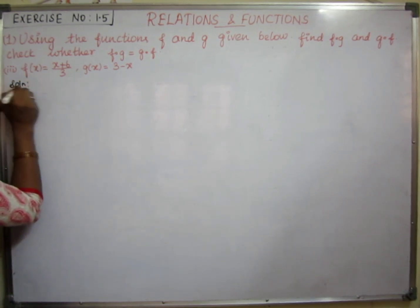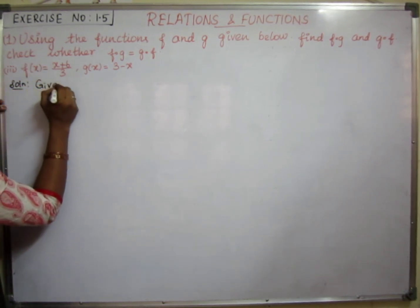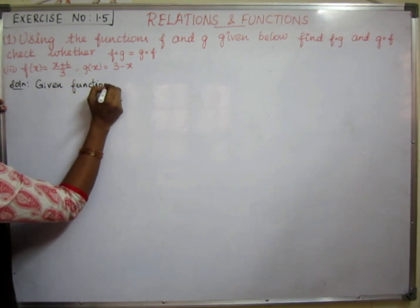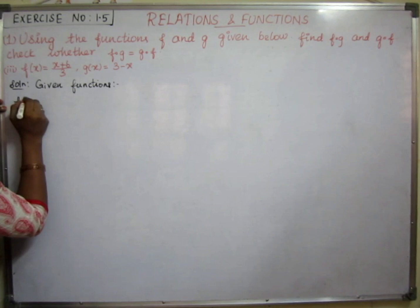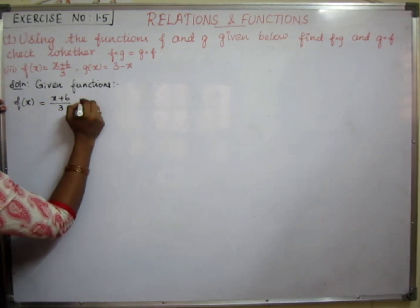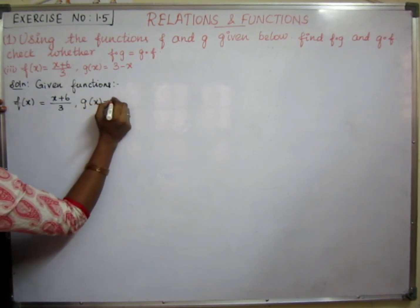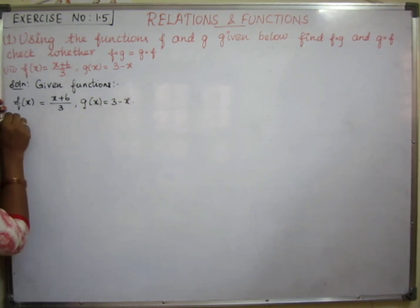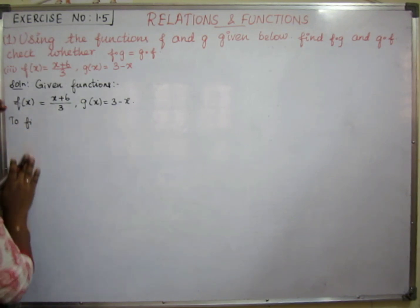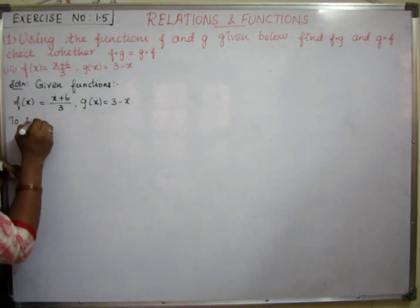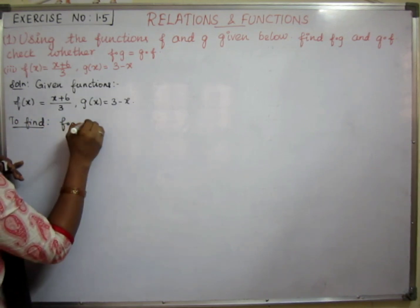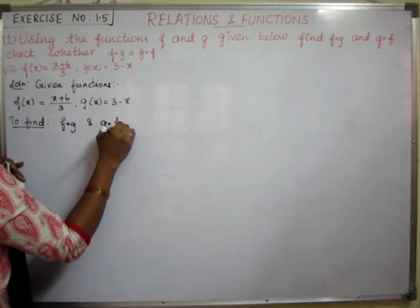Solution. Given functions: f of x is equal to x plus 6 divided by 3, and g of x is equal to 3 minus x. To find and verify f∘g and g∘f.